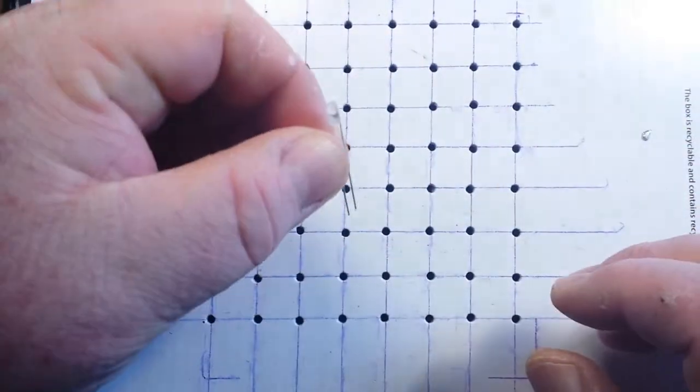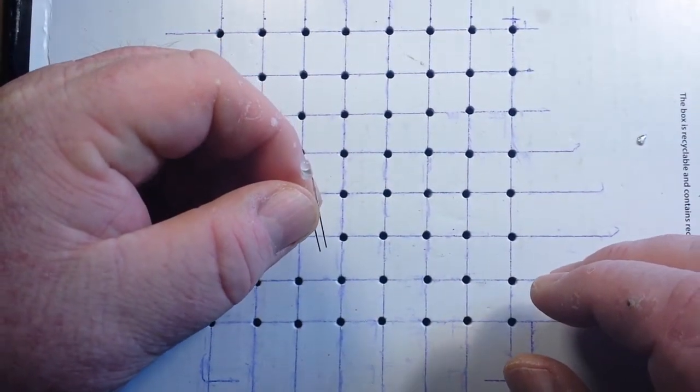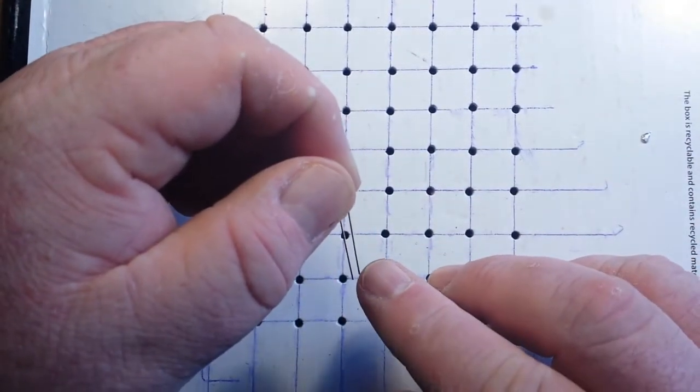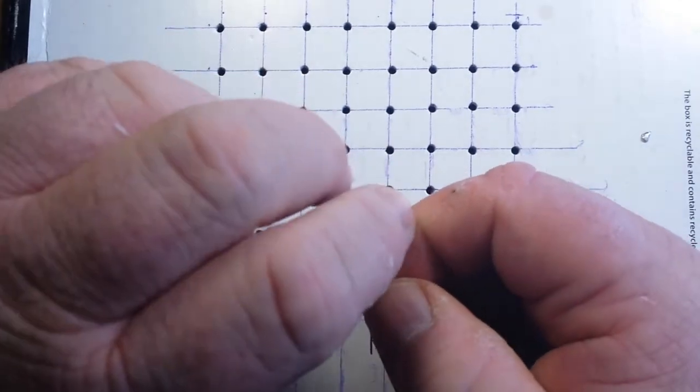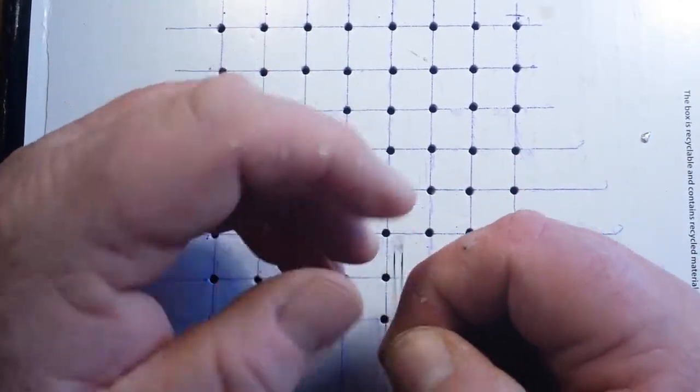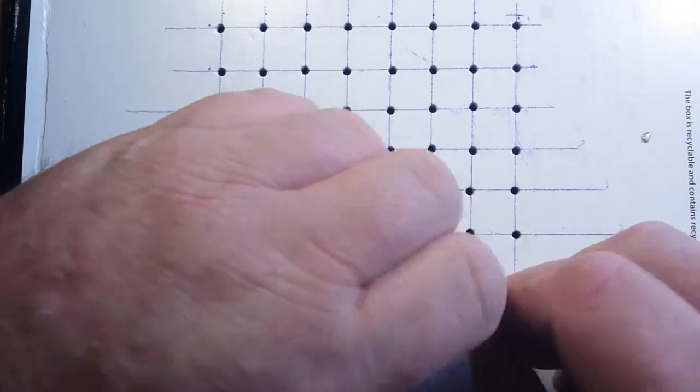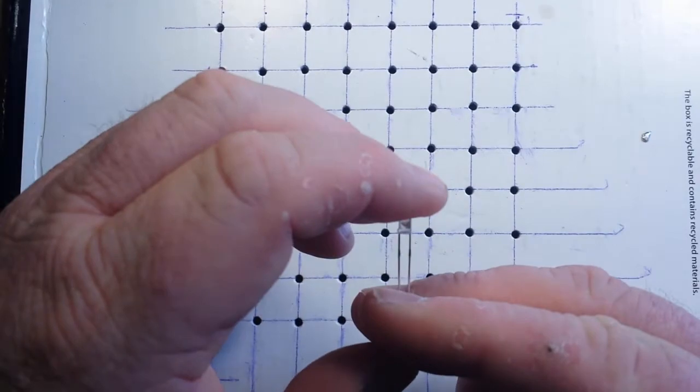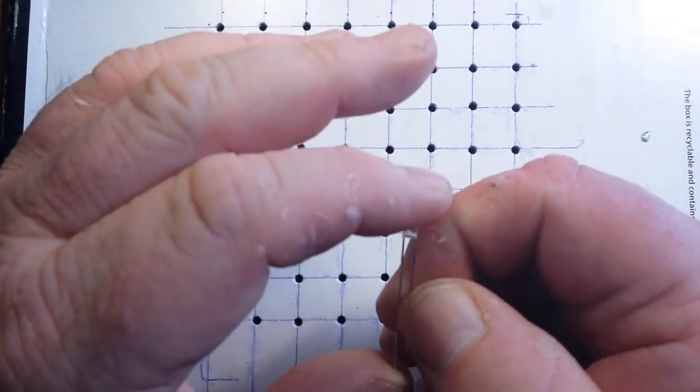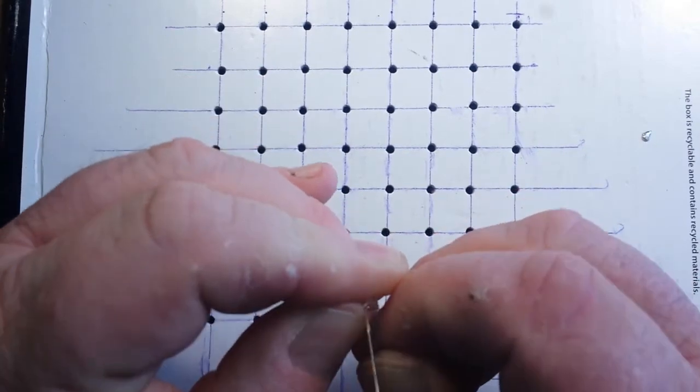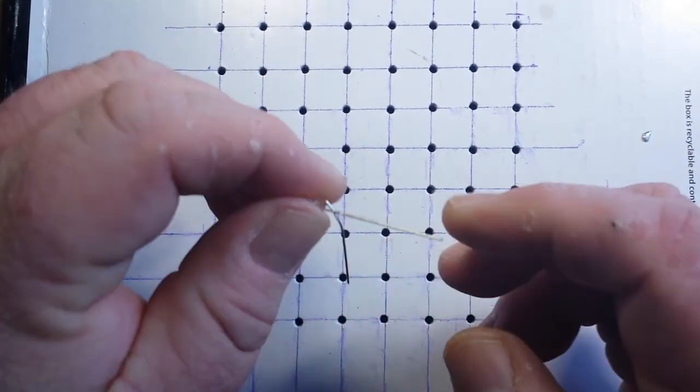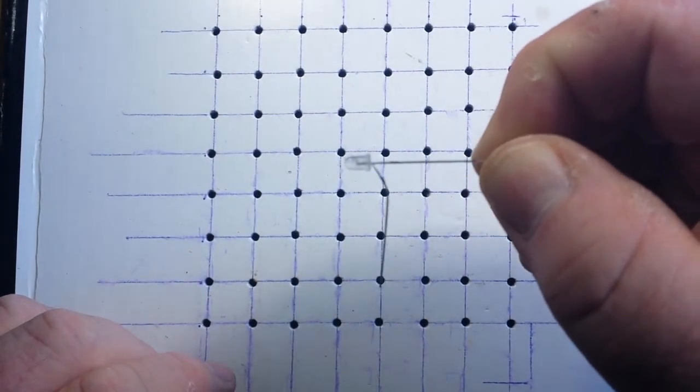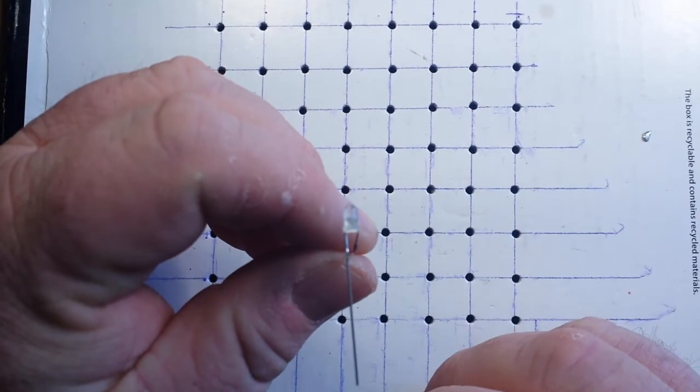So you'll notice these LEDs have really long legs, all right, and here's what we've got to do. We're going to take the shorter leg, the cathode—let me try and explain this to make it clear. Hold the LED pointing away from you with both legs in a horizontal position. Bend the cathode straight down so that it is at a 90 degree angle to the anode in that same plane.